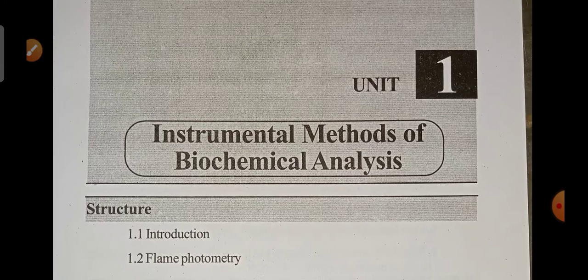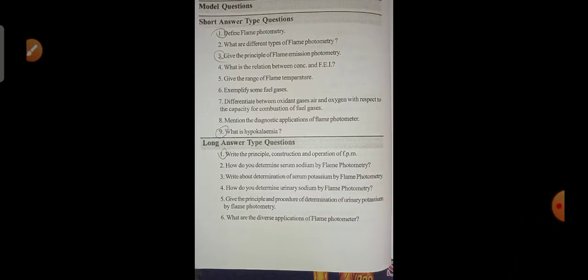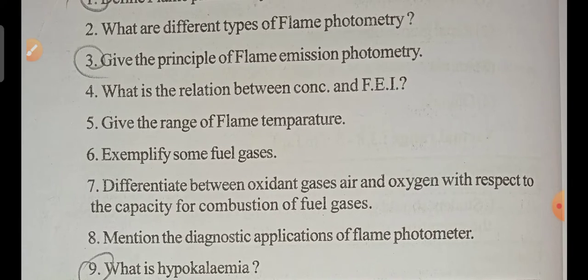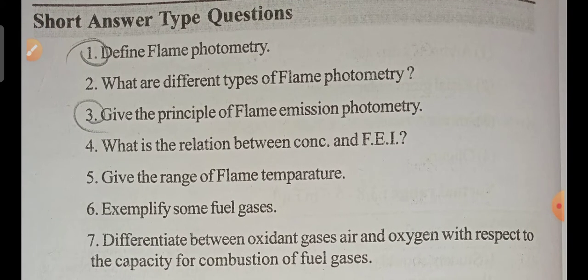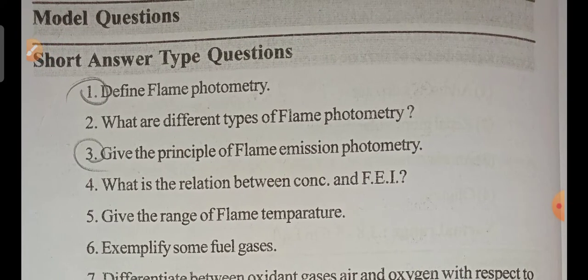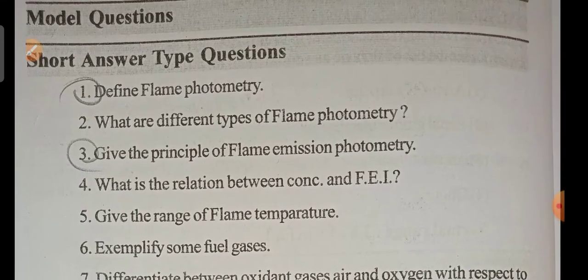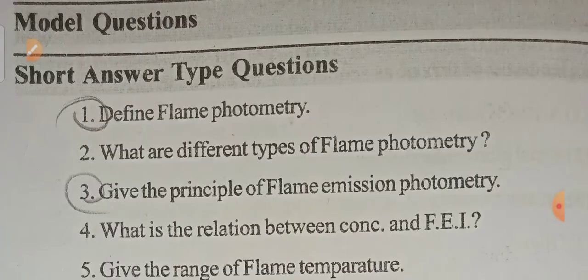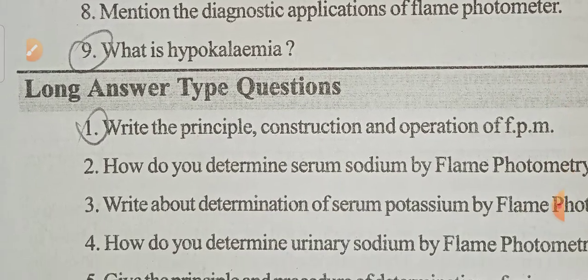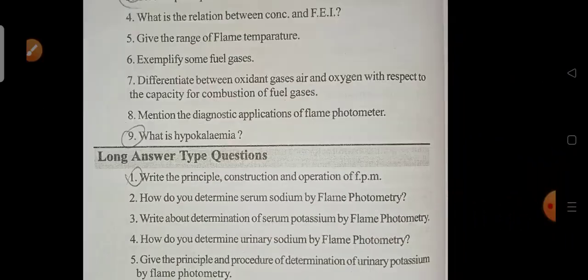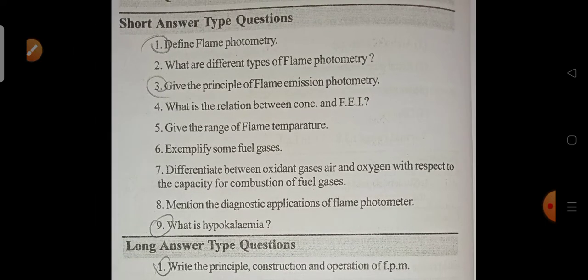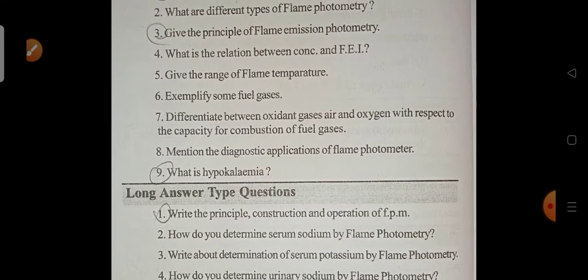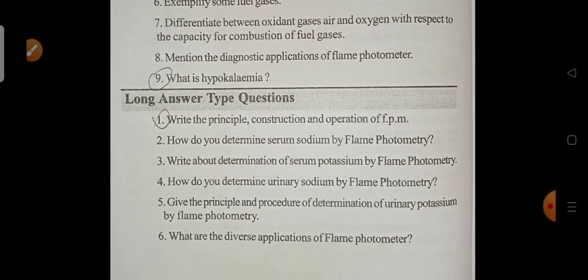The first unit is Instrumental Methods of Biochemical Analysis. The important questions from this unit are question numbers 1, 3, and 9. For long answers, the important questions are the first and third questions, and for short answers, the first, third, and ninth questions are important.